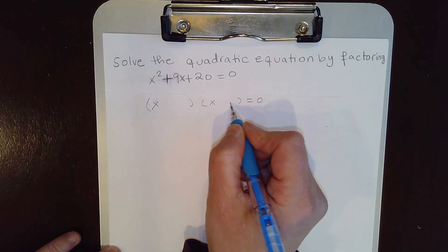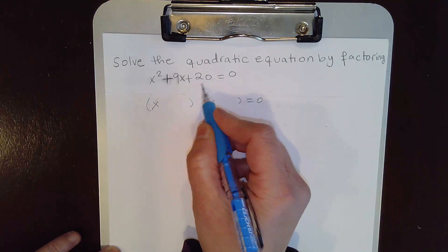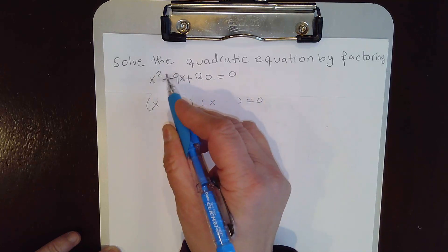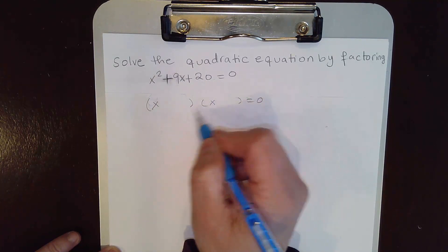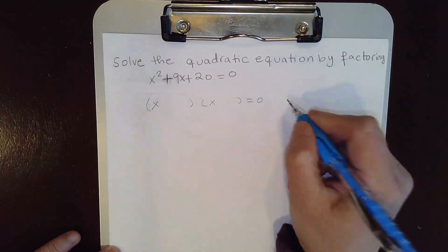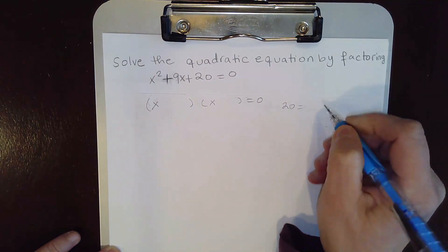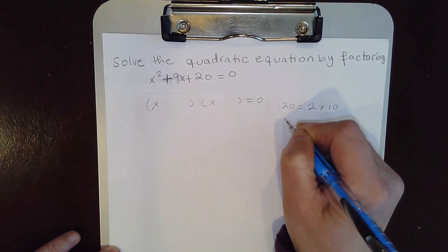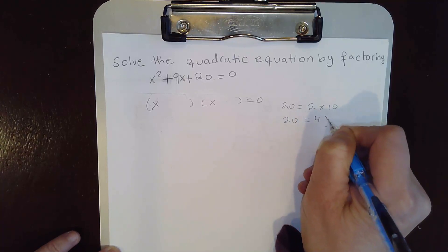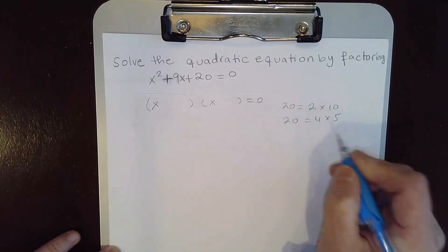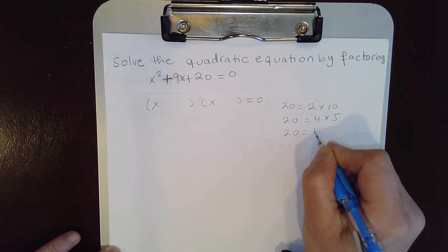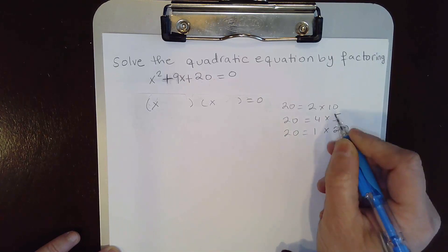They must be both positive. How can we get 20? 20 is 2 times 10, or 4 times 5, or 1 times 20. These are our options.